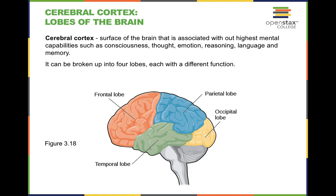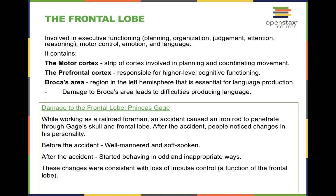The cerebral cortex is overall the surface of the brain associated with our highest mental capability, such as consciousness, thought, emotion, reasoning, language, as well as memory. The four lobes of the brain include the frontal lobe, the parietal lobe, the occipital lobe, as well as the temporal lobe. One way to remember this is the acronym F-POT: frontal, parietal, occipital, and temporal.